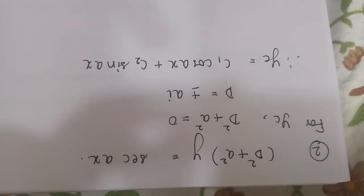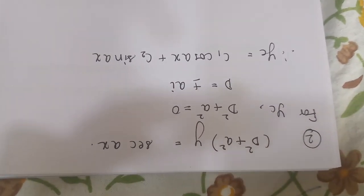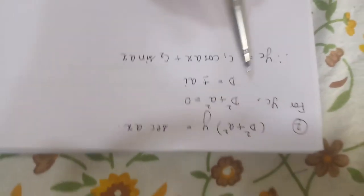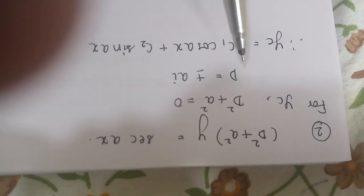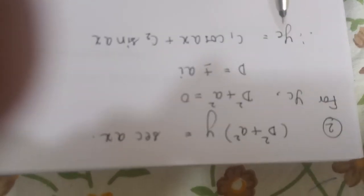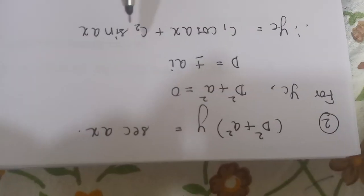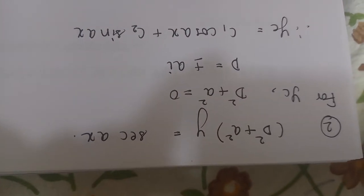Now let us take the second question from our classwork notebook again to be done by MVP. So we have taken Yc equals d square plus a square equals 0, d equals plus or minus ai. That means Yc is c1 cos ax plus c2 sin ax.